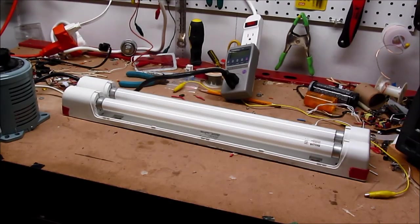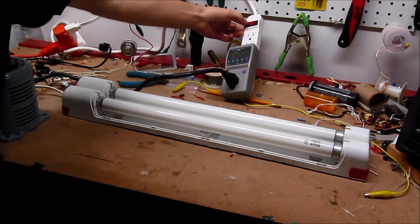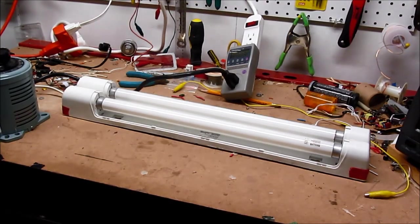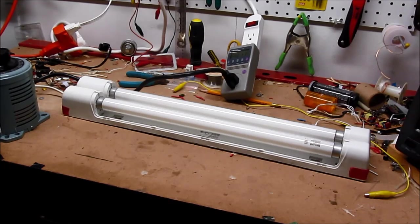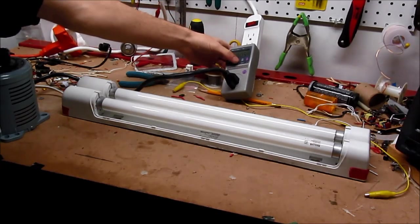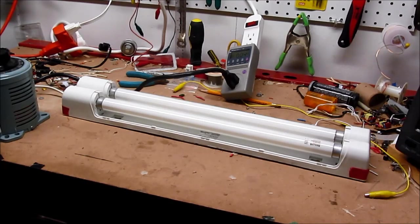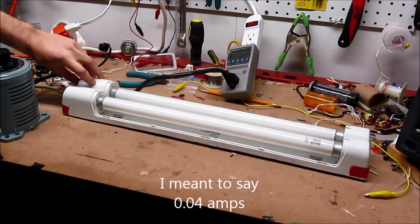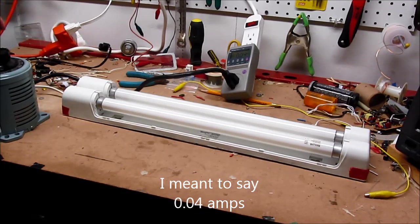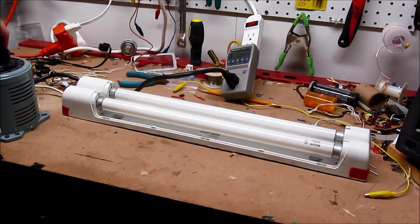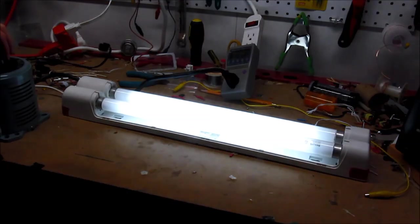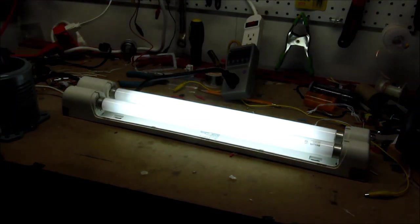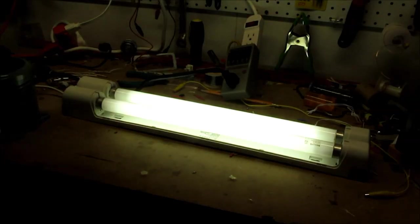All right, we are ready for the first test of the assembled fluorescent hack. Power strip on. Variaq is on, and drawing 0.4 amps, it's at zero, fluorescent hack is on, no change in current, and slowly... And it looks like we have liftoff. Yep.